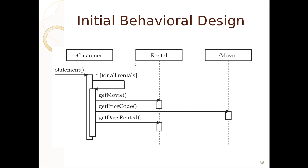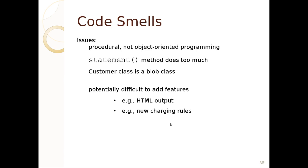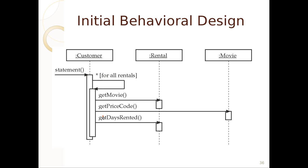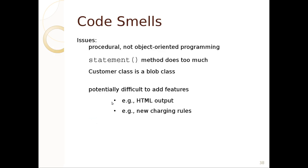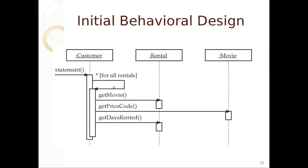The general behavior: we ask the customer class for a statement, then it goes through all rentals getting the movie, price code, and days rented. What smells here? It's procedural — not really object-oriented. The statement method does too much. The customer class would be difficult to extend. It's just asking other classes for data — the rental isn't responsible for itself, and neither is the movie.